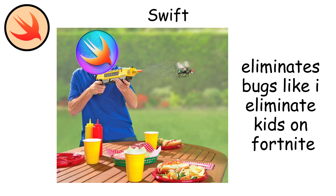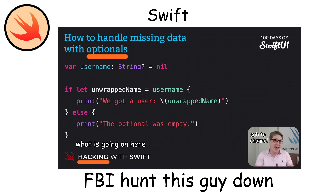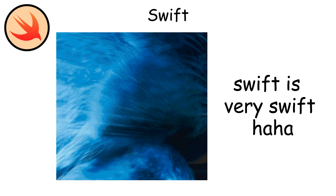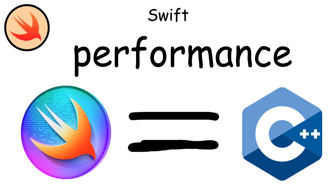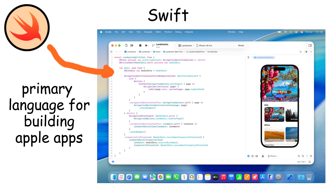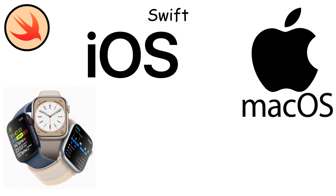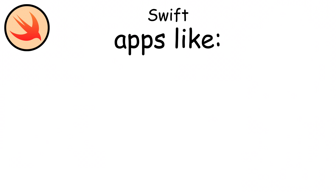Swift eliminates entire categories of bugs by using features like optionals, which force developers to handle nil values explicitly. It's also extremely fast, in many cases matching C++ in performance. Swift is the primary language for building iOS, macOS, watchOS, and tvOS apps.